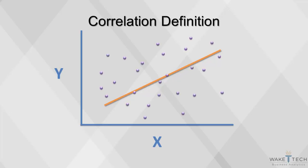By contrast, if the observations are scattered further out, we might say the relationship between x and y is less correlated, or that there is a weak correlation.